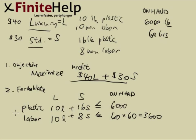These are called the explicit constraints. There are implicit constraints, which are S is greater than or equal to 0 and L is greater than or equal to 0. That just means you can't make a negative number of anything.